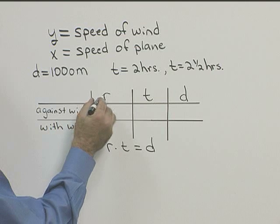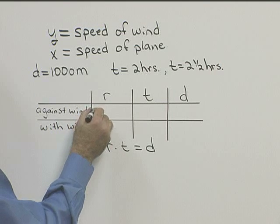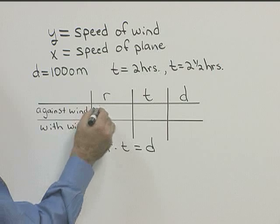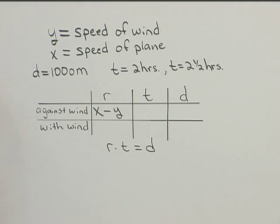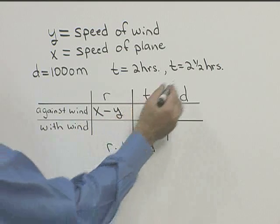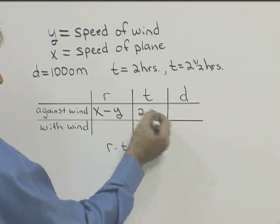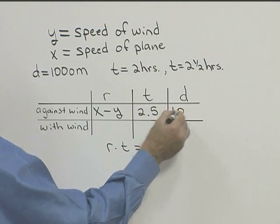Well against the wind, our rate is going to be the speed of the plane, X, and since it's against the wind, the wind is working against us, we have to subtract Y off from it. So X minus Y is the speed against the wind. We know the time is two and a half hours or 2.5, and the distance is a thousand miles.